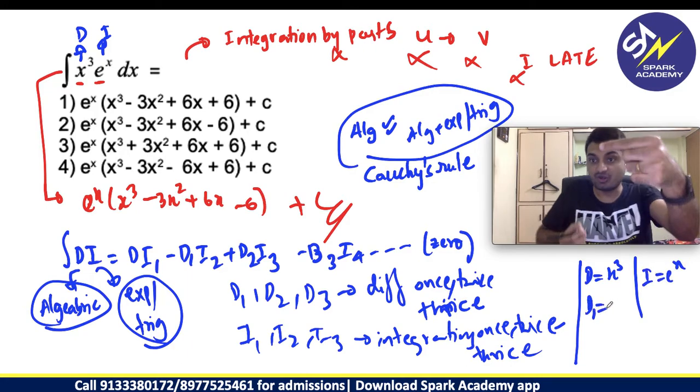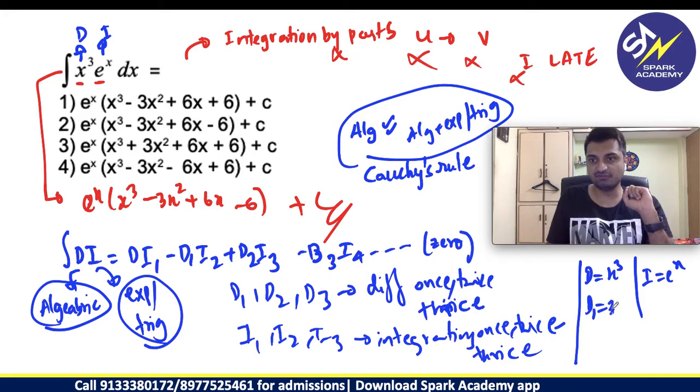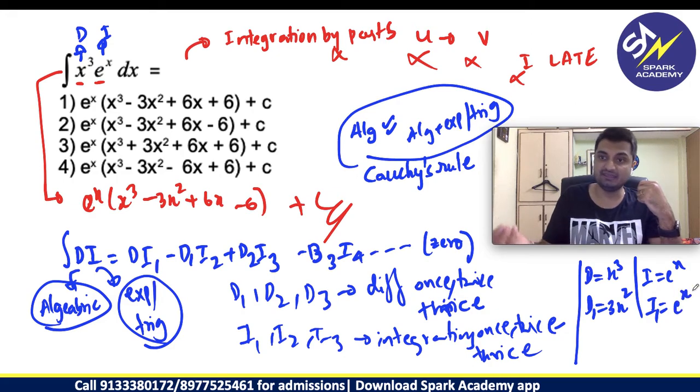D₁ means you have to differentiate once. Derivative of x³ will be 3x². I₁ will be what you have to integrate once. Integral eˣ will be eˣ.